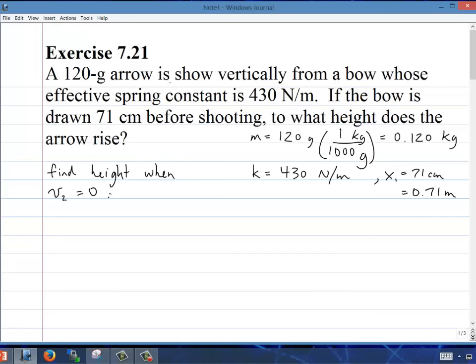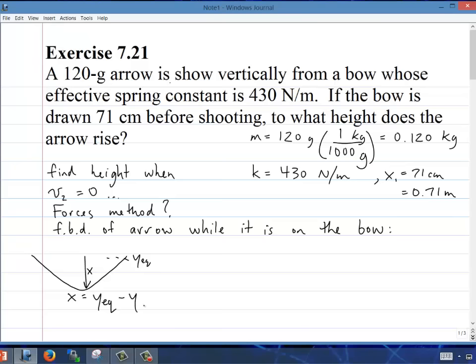I know this is Chapter 7 and must be a conservation of energy problem, but let's just for fun try to use forces. Will the forces method work here? Well, we have to start by drawing a free body diagram for the arrow while it's on the bow. The bow is stretched downwards. We call the equilibrium of the bow y_eq. It's stretched down a distance x, so x = y_eq - y, where y is the height off the ground. So the force of the spring, kx upwards, will be k(y_eq - y). So there's the free body diagram: spring force up, mg down. So the net force, which is ma_y in the y direction, is k(y_eq - y) - mg.